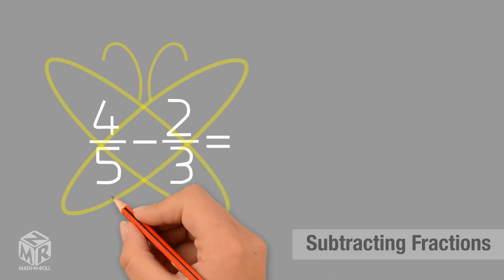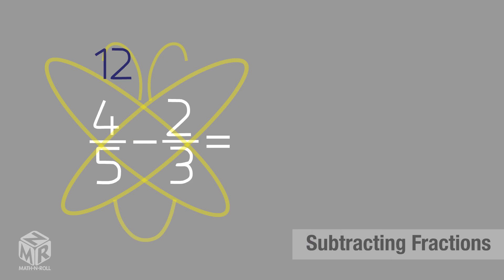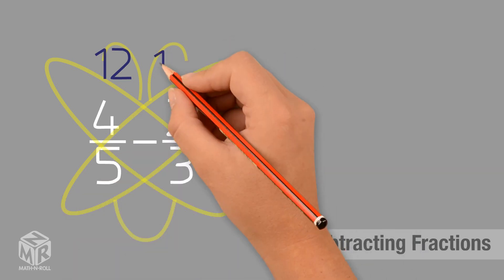Next, we multiply the numbers in each wing. 4 times 3 equals 12, and 5 times 2 equals 10. Now we multiply our denominators and put it inside of the body.